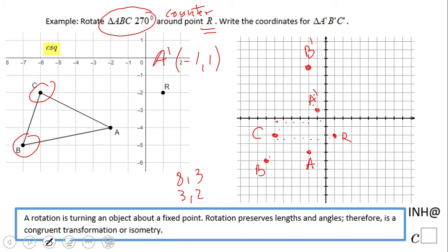So the exchange. Like that. One, two, three, four, five, six, seven. Seven units away from point R. We are going to go seven units up. One, two, three, four, five, six, seven. This is point C prime.